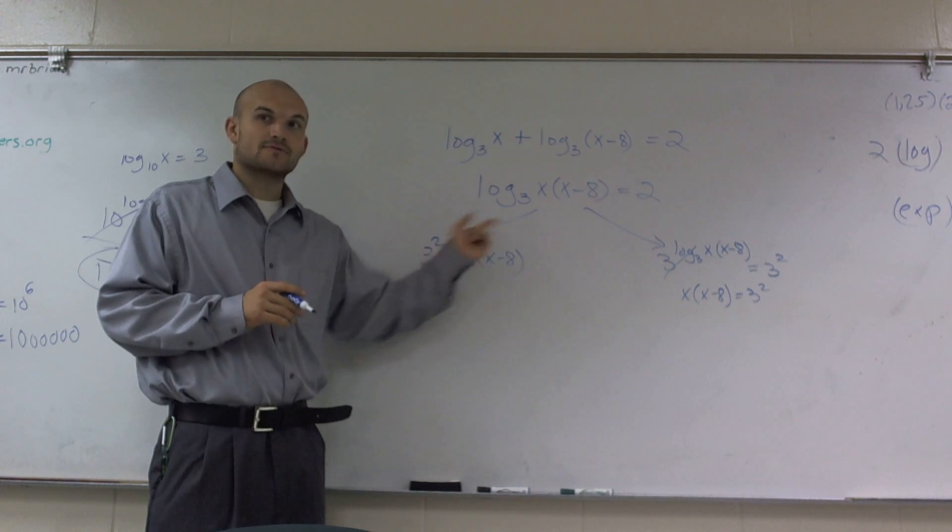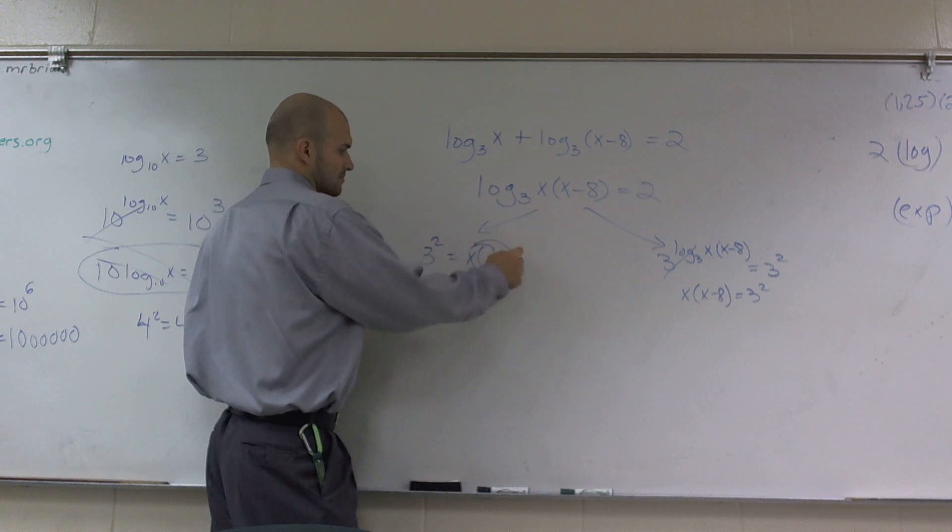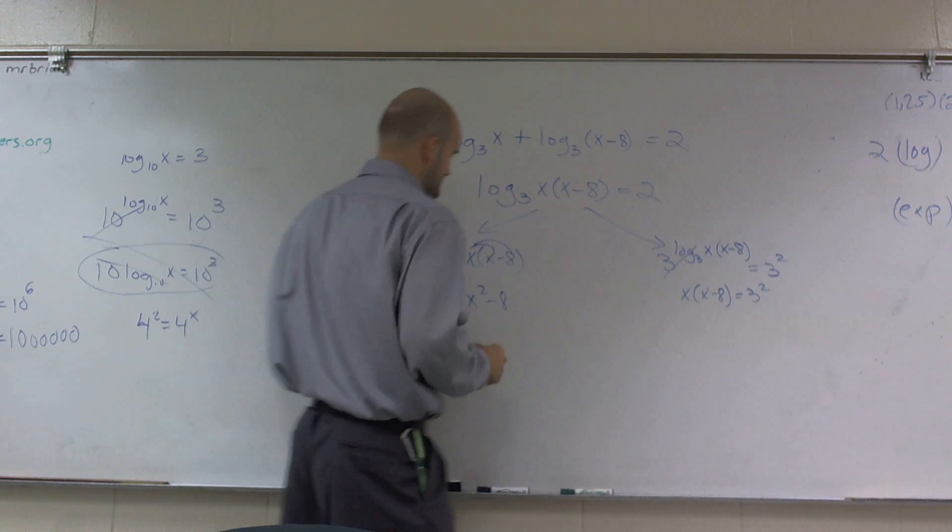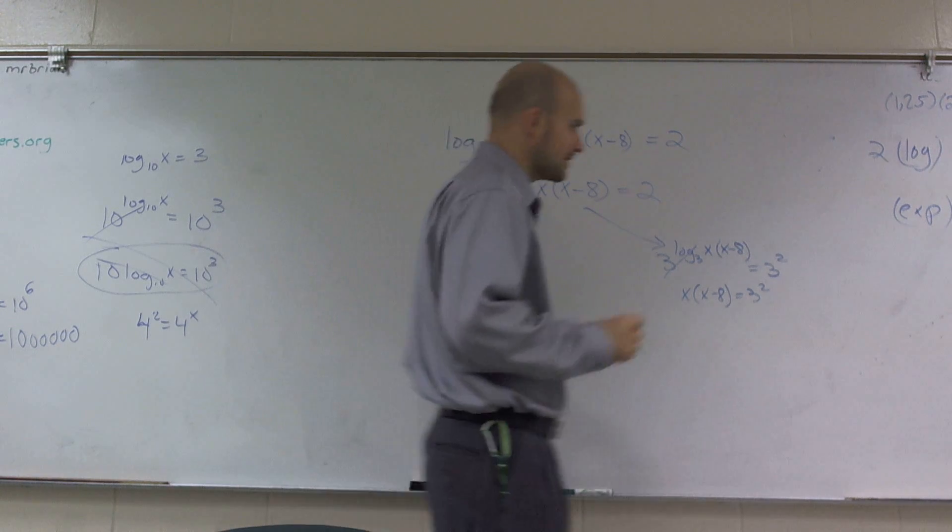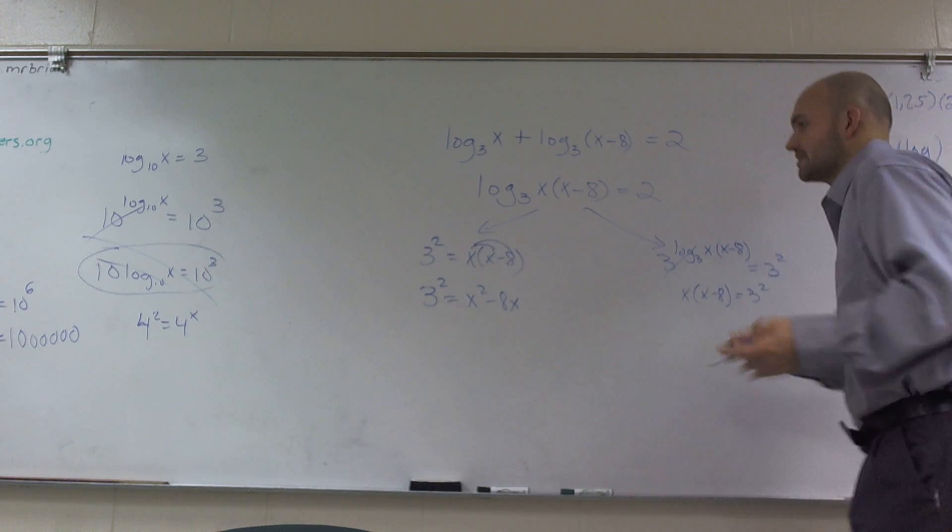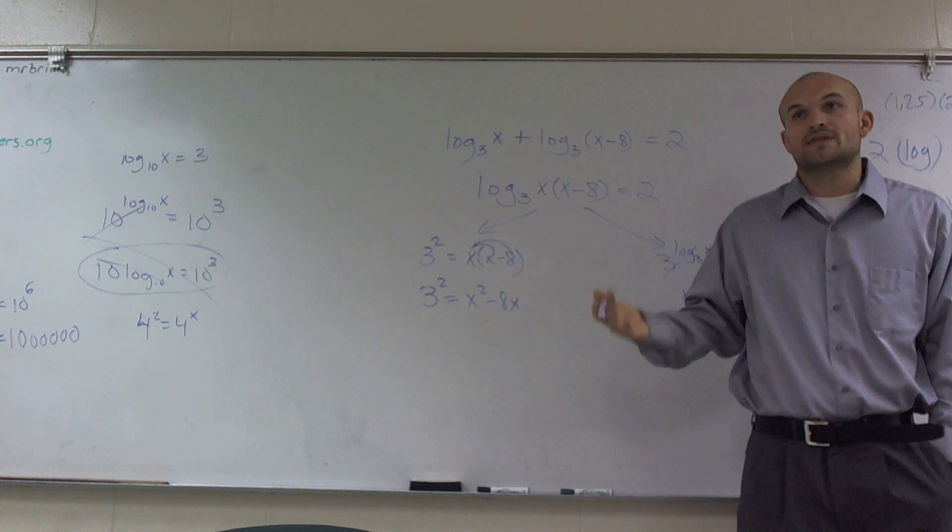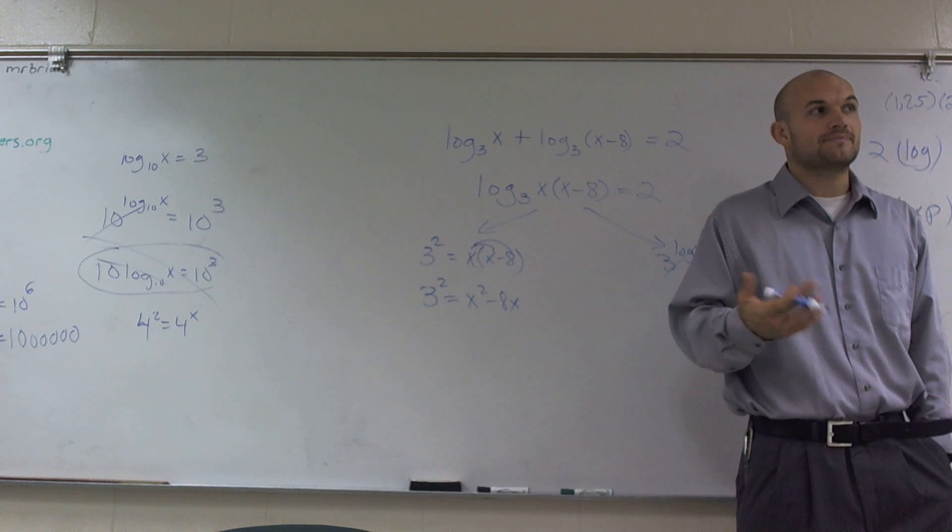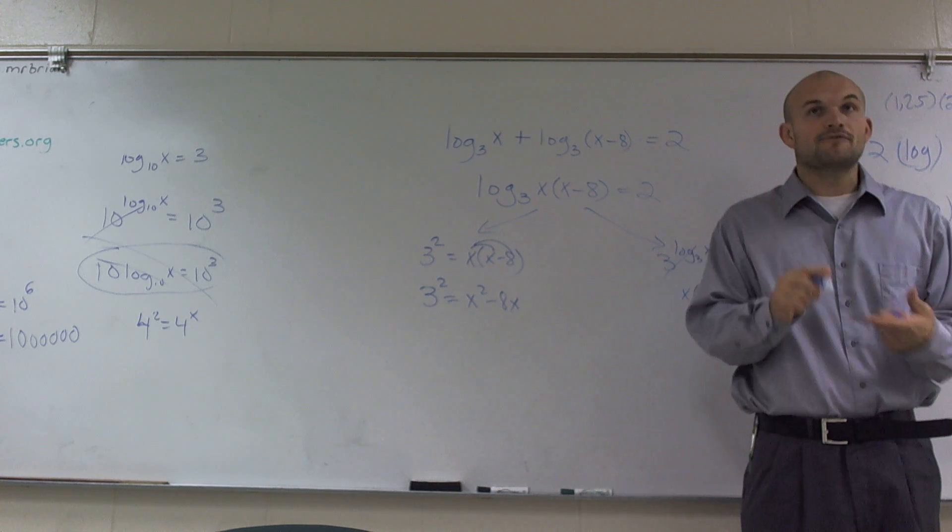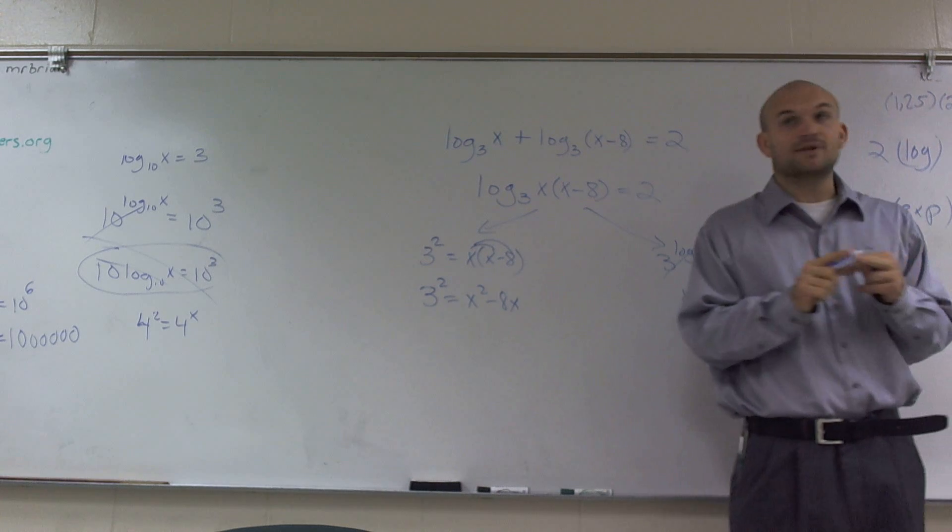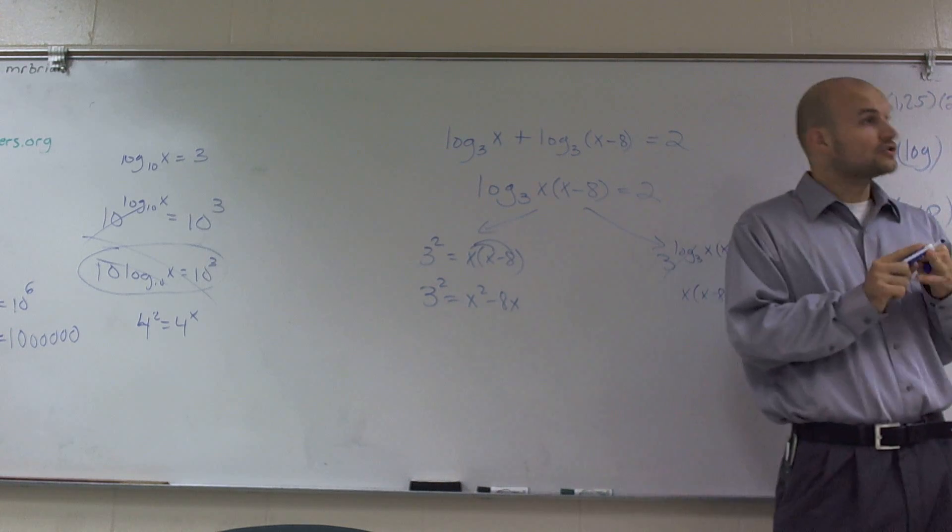So, when you guys look at this, now what you're going to have to do is factor this through. So, you get three squared equals x squared minus eight, or I'm sorry, minus eight x. All right? Now, the important thing when you guys look at this is, now I have an x squared term, right? And whenever we solve with x squared terms, we have to look at factoring.